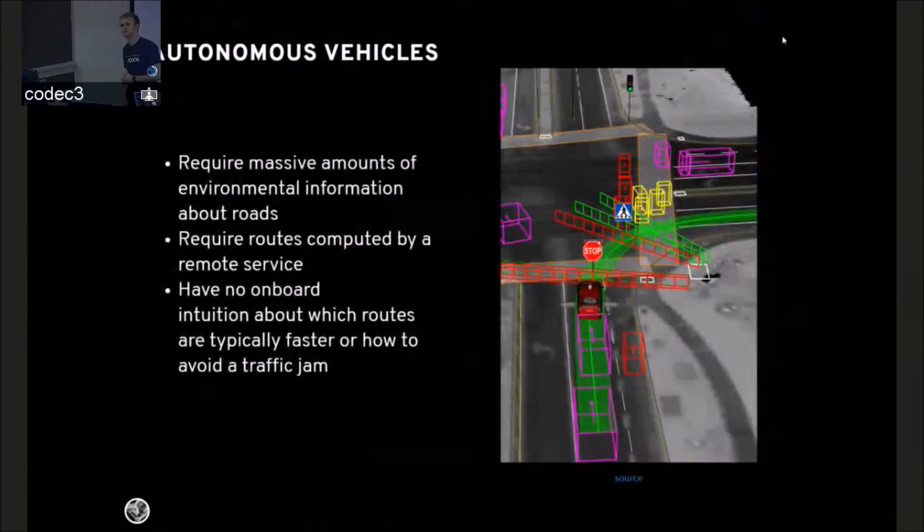On the other hand, autonomous vehicles require massive amounts of environmental information about roads. They require routes computed by an external service. They have no onboard intuition about which routes are typically faster, or how to handle a traffic jam.